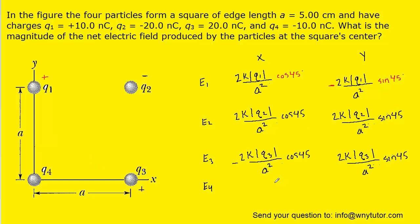For electric field E4, we again place a positive test charge at the center. Charge Q4 is negative, so that test charge is pulled towards Q4. The x component points to the left, so it is negative, and the y component points downward, so it too is negative. We plug in those expressions for E4.